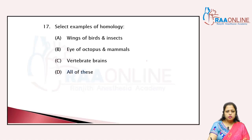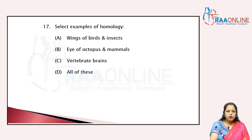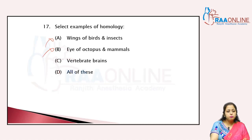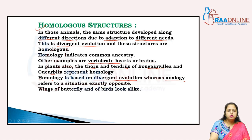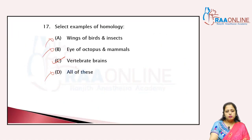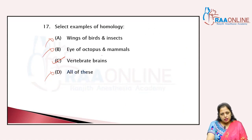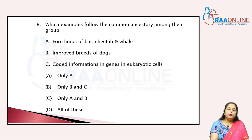Select the examples of homology: wings of birds and insects, eye of octopus and mammals, vertebrate brains — all of these? Wings of birds and insects, and eye of octopus and mammals show analogy. Vertebrate brains show homology. So the answer is C — vertebrate brains.